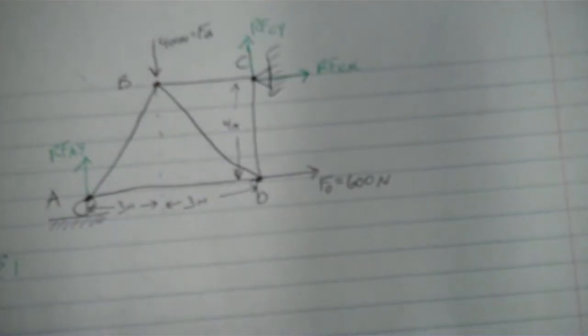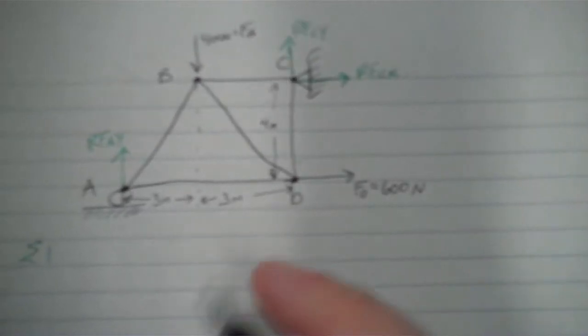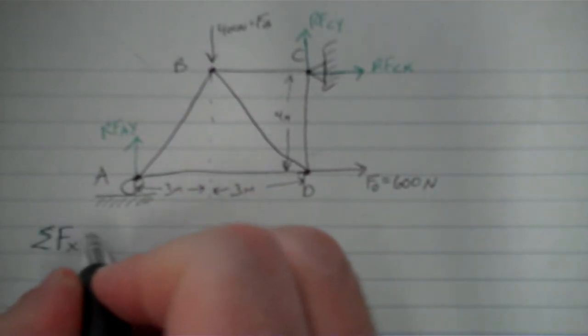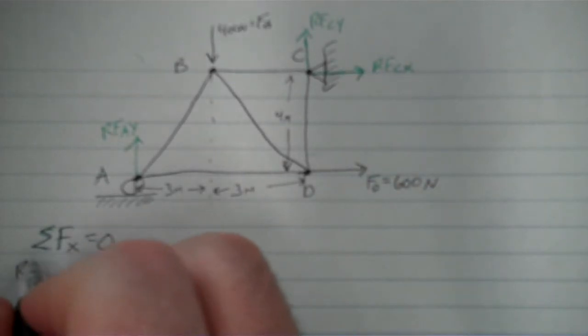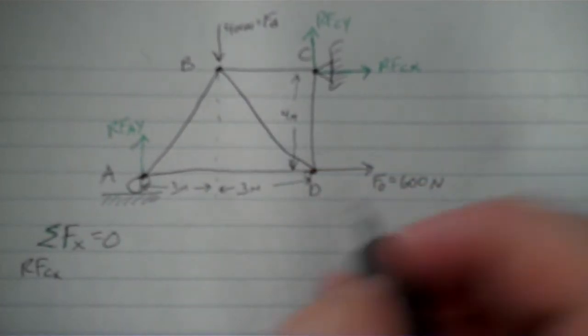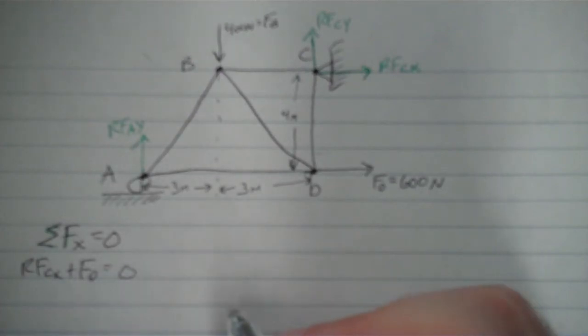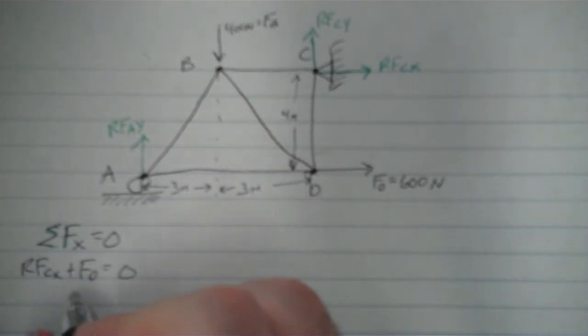I'm going to start off with, let me go back to my black pen, I'm going to start off with the sum of the forces in the X equals zero. Let's see the forces we have in the X. I have RFCX, this guy over here, and I have the force at D. So plus FD equals zero. Now I started off with those in the same direction. Now obviously they can't both be in the same direction, so RFCX is probably going to be the other direction. But I know FD is equal to...